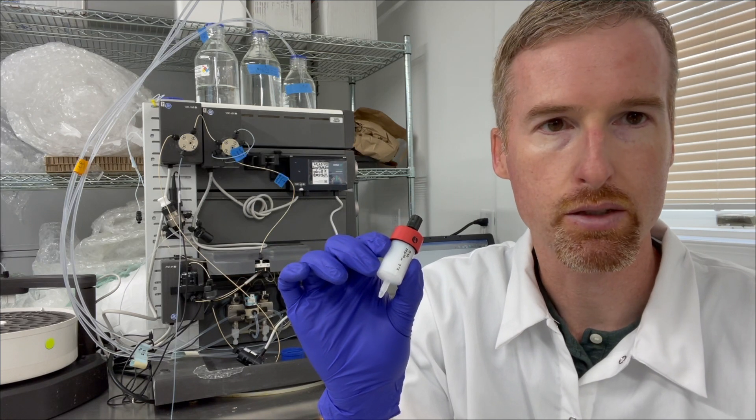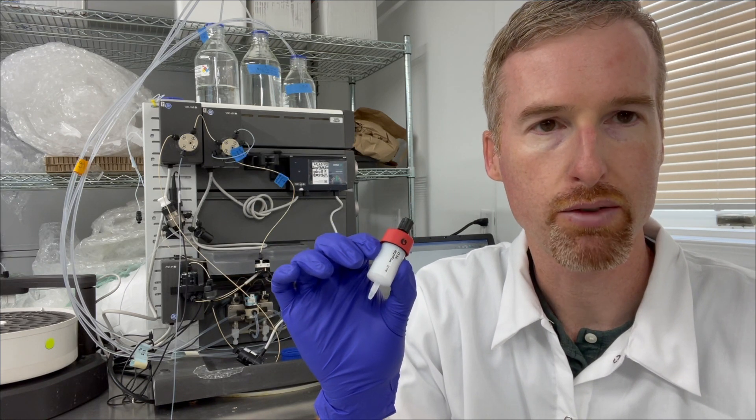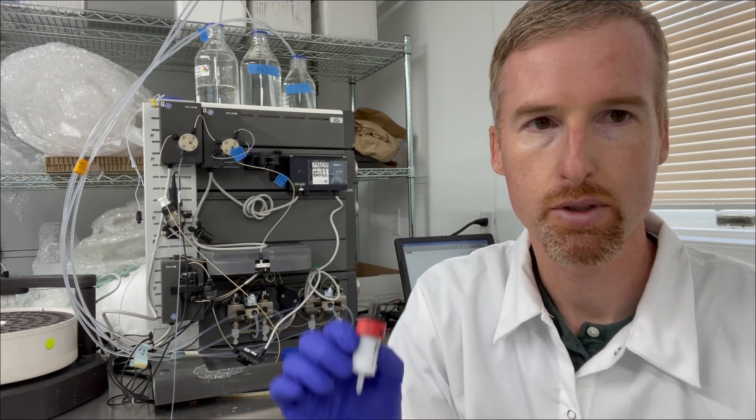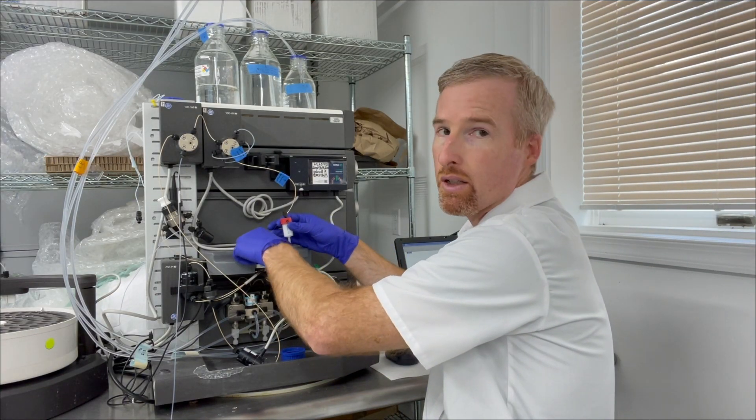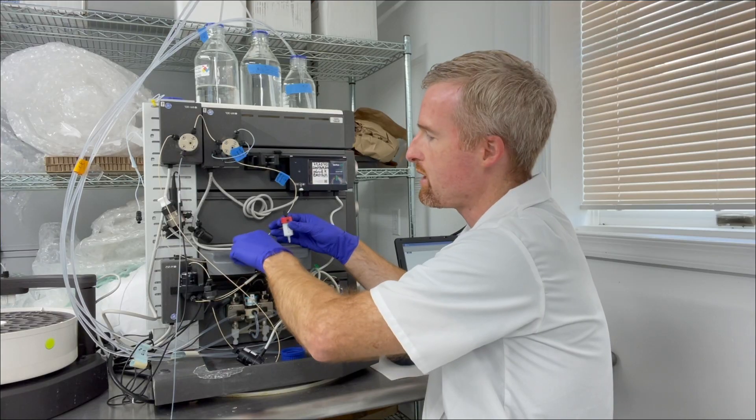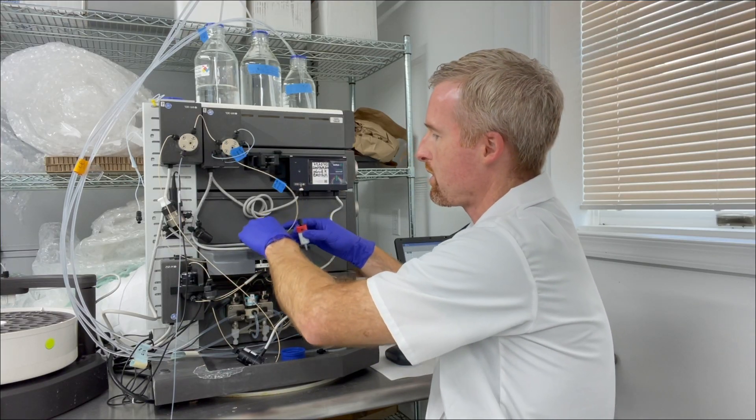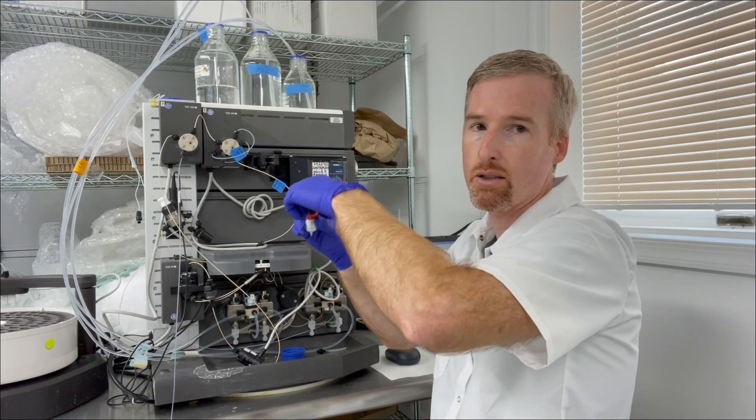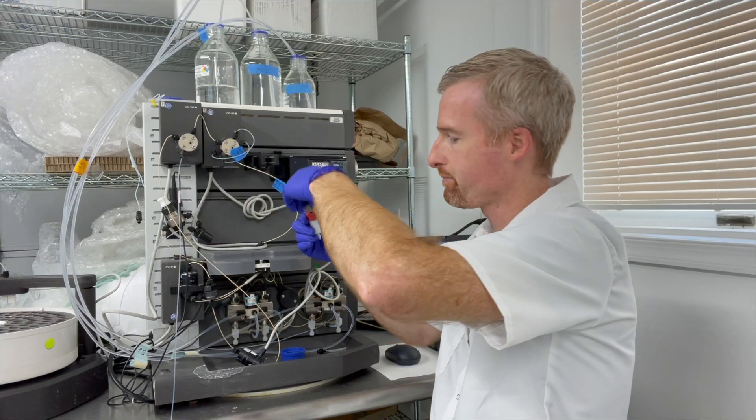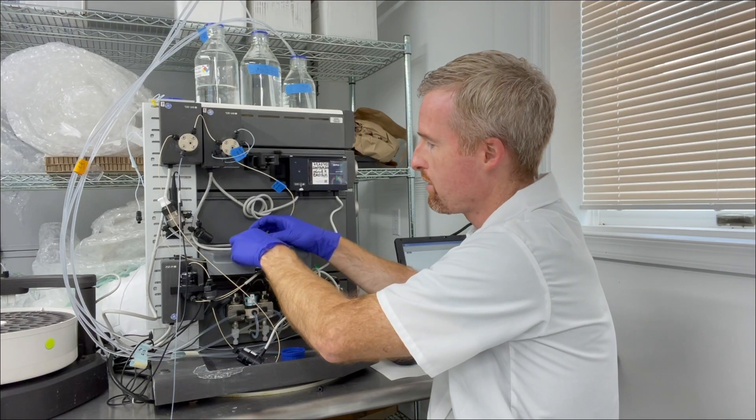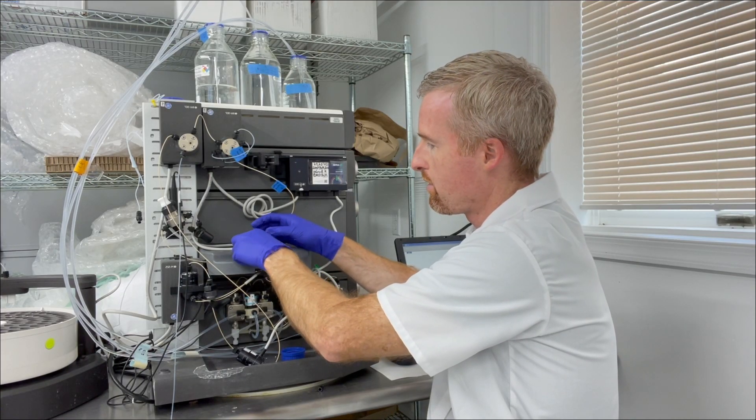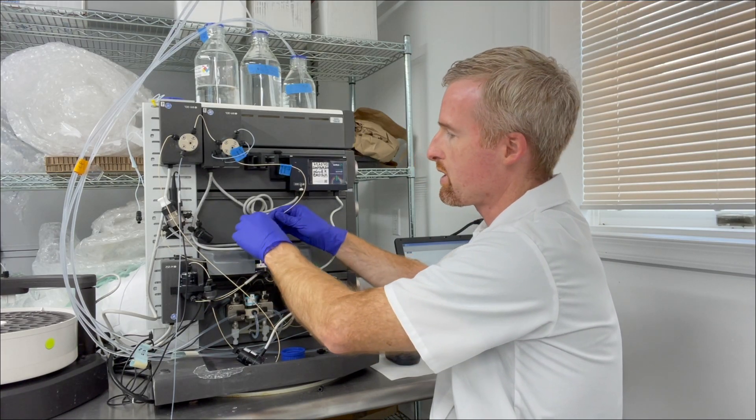So I'm going to use the FPLC to pump buffer A into the column. In order to do that I'm just going to hook it up right here above the UV detector. So I'll unhook that, take the plug out of the top of the column, I'll screw it into the UV detector here. Get it just finger tight.